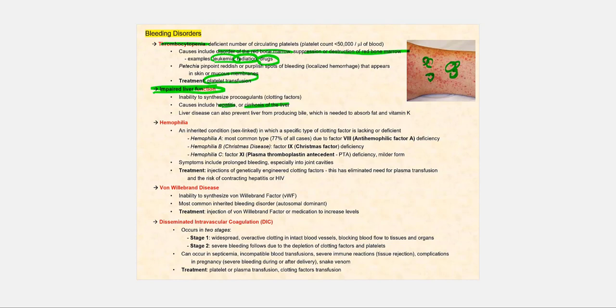Furthermore, the liver produces bile, and bile is important for the absorption of fat. Now, vitamin K is a lipid-soluble vitamin. Vitamin K is produced by the bacteria found in our intestines. For us to absorb this lipid-soluble, hydrophobic vitamin, we need bile.